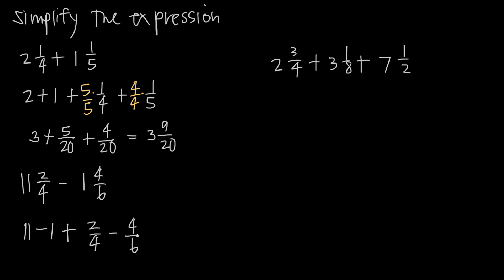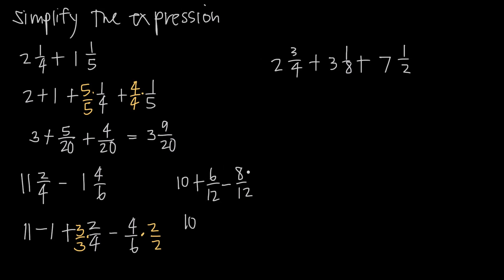The common denominator between 4 and 6 is 12, the least common multiple. To get to 12, I multiply 2/4 by 3/3 and 4/6 by 2/2. So 11 minus 1 gives me 10. Then 3 times 2 gives me 6 over 12, and 4 times 2 gives me 8 over 12. So I get 10 and 6/12 minus 8/12, and 6 minus 8 is negative 2, giving me minus 2/12.